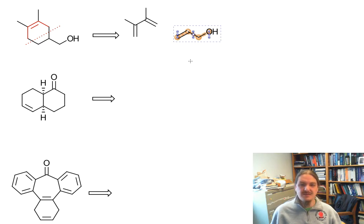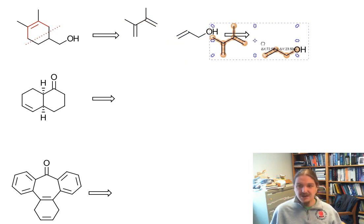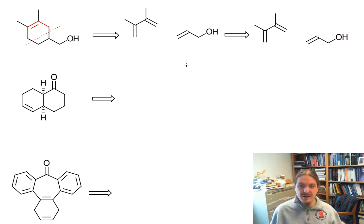You might be suspicious that this alcohol is not actually a very good dienophile. Remember, dienophiles are things that have electron drawing groups on them. In fact, the actual dienophile might not have been the alcohol. It might have been this aldehyde originally, and then the aldehyde was reduced to the alcohol later on.